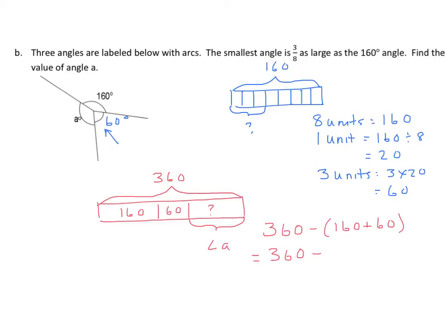Simplify the expression in the parentheses. We get 220. And this is a pretty easy one to subtract. We don't have to do any regrouping. We have 140. So angle A equals 140 degrees.